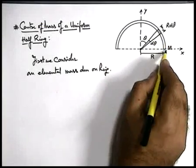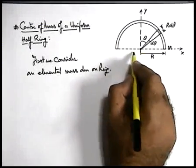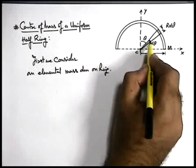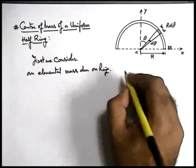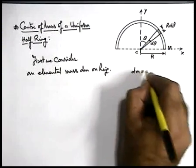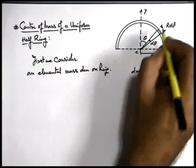Now as the whole mass m is distributed uniformly on the half ring which is subtending an angle π at its center, for the elemental mass which is subtending an angle d-theta at the center, its mass dm can be written as m/π times d-theta. That is the mass of this element.